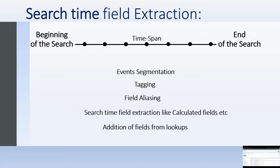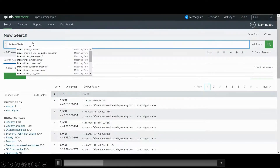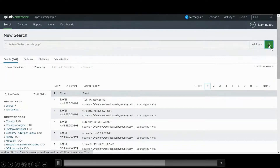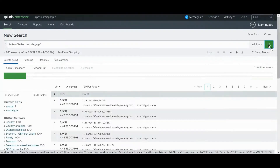These are some examples where you can write commands to extract fields or add new fields to events during search time. To demonstrate from the video: when I write the index and hit Enter, the search time field extraction begins. When the search ends, this extraction completes — that process is called search time field extraction.